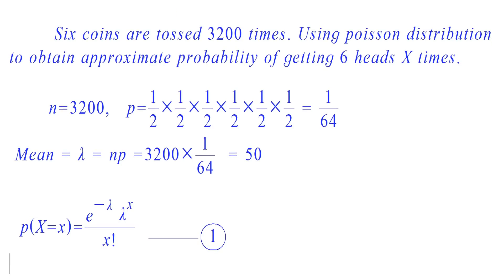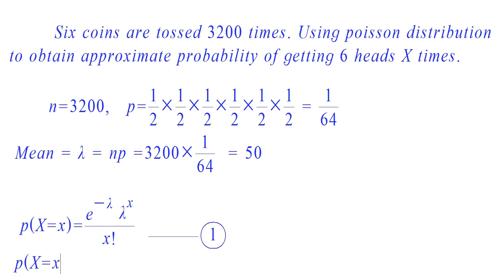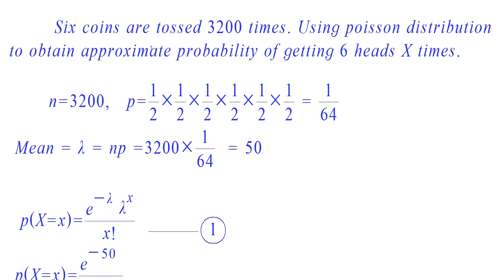Here we need to find the approximate probability of getting 6 heads x times. Therefore, we substitute lambda equal to 50 in the formula. The approximate probability of getting 6 heads x times is equal to e raised to minus 50, into 50 raised to x, by x factorial.